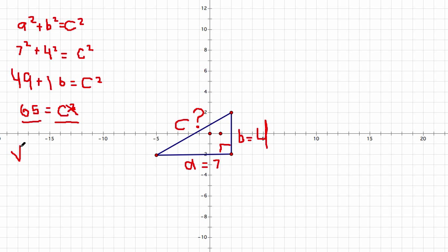So let's do that now. The square root of sixty-five equals the square root of C squared. Now, the square root of sixty-five is approximately eight, because eight times eight is sixty-four. I'm going to round it out to the nearest number.